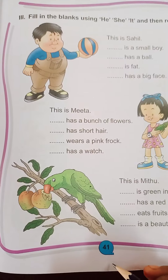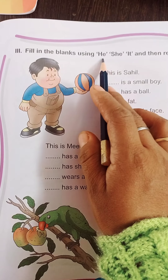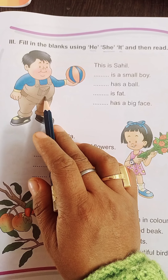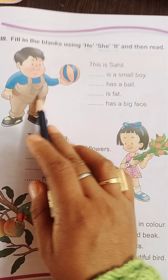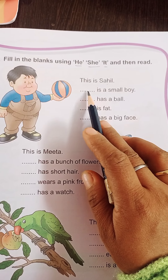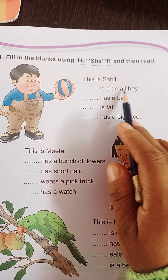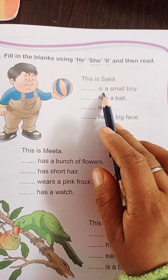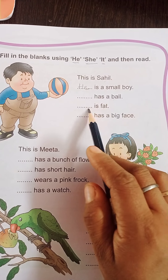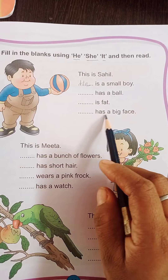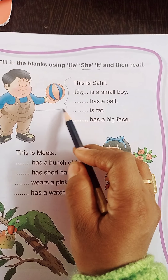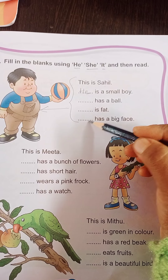Now come to next page, 41. Fill in the blanks using he, she, it. Now who is he? He is Sahil. This is Sahil. He is a small boy. We are talking about Sahil, isi liye yahaan per bhi 'he' ho ga. He has a ball. He is fat. He has a big face. Kyunki hum logon ne yahaan per Sahil ke baare mein baat kiya hai — toh yahaan kya ho ga? He.